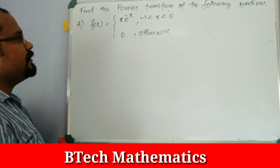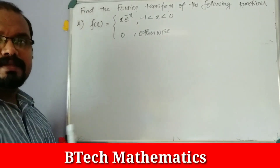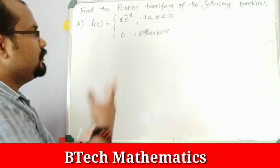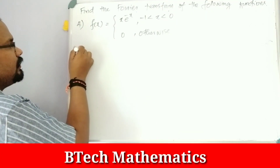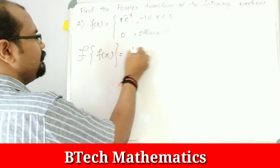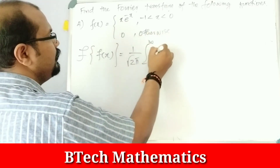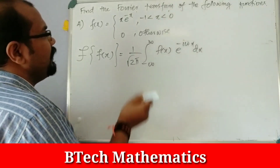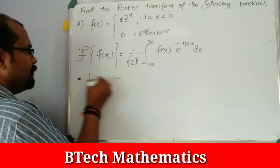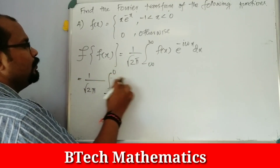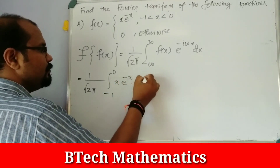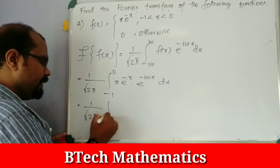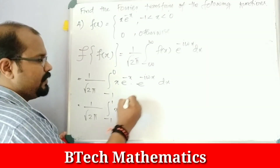Fourth question: f(x) = x·e raised to minus x for minus 1 < x < 0, and 0 otherwise. Applying the Fourier transform formula, the limits become minus 1 to 0. So F(ω) = 1 over root(2π) times the integral from minus 1 to 0 of x·e raised to minus x times e raised to minus i·ω·x dx.